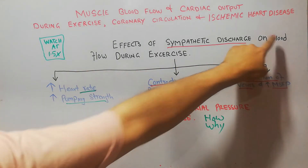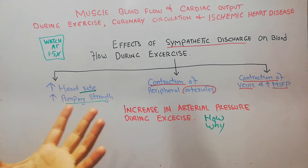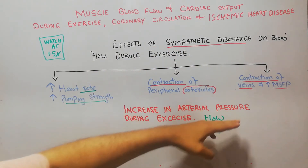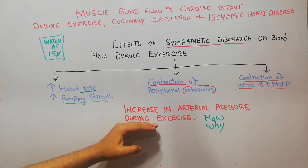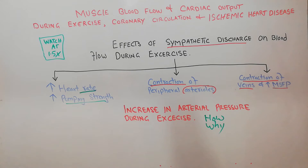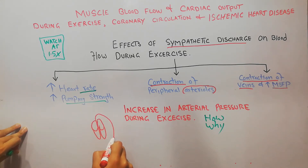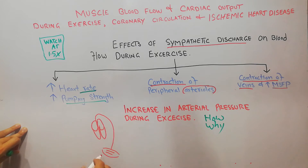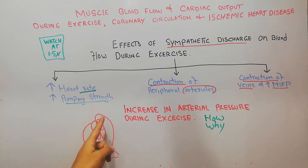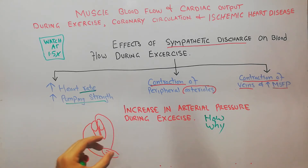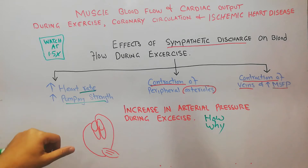It is important to increase blood flow during exercise because the exercising muscles need more blood. To increase blood flow, the arterial pressure should also increase, because arterial pressure helps in increased blood supply. The heart pumps blood as cardiac output, which goes to peripheral vessels supplying nutrients to tissues, and then deoxygenated blood returns to the heart as venous return.